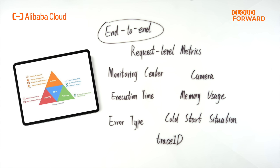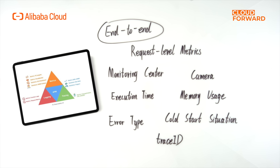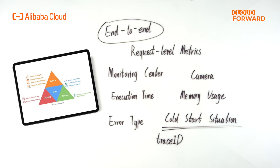To speed up problem identification at the end-to-end level, Alibaba Cloud supports request-level metrics — FC Insights — and has released a monitoring center. FC supports request-level metrics by adding an additional metric log for each user request, which is like adding a camera for each request. Through request-level metrics, users can clearly see information such as execution time, memory usage, error type, cold start situation, trace ID, and other information related to requests. Users can also connect all performance capabilities of observability based on request-level metrics.